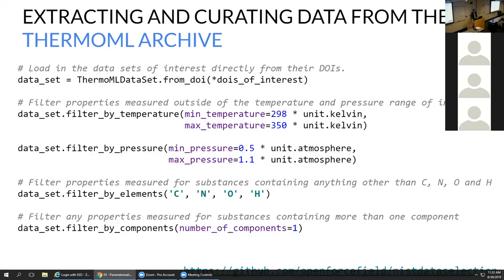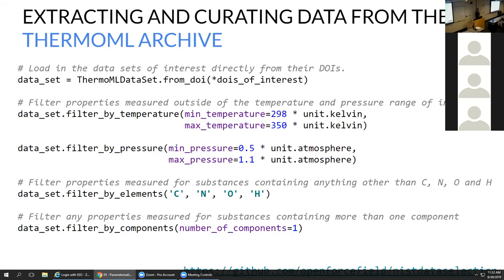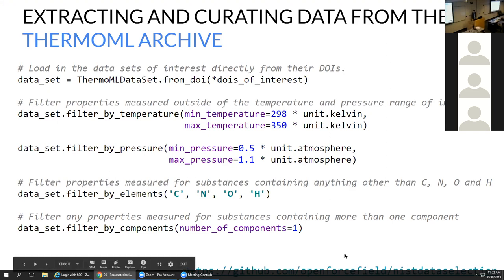For the sake of time I won't talk too much about this, but essentially we've got this Python API — a ThermoML dataset object. You just give it the digital object identifier, the entire dataset you want to pull from the ThermoML archive, or a list of URLs or file paths. It will understand this data format, pull the data into a Python object, and you can do some basic filtering by temperature ranges, pressure ranges, and so on. This object has been what we've used in the first few rounds of fitting to build our dataset. For anyone interested in how we pick the dataset, we use this object in the NIST data selection repository on GitHub, which details how we use this API to build our training sets.